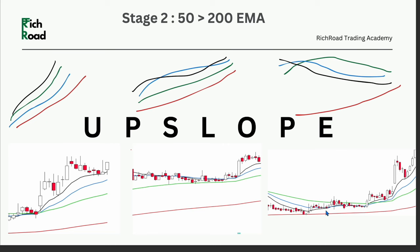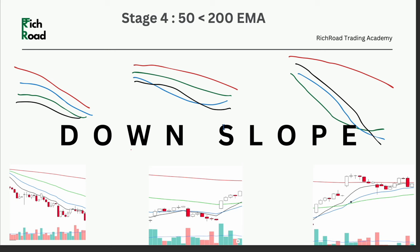The inverse of stage two is stage four. In a perfect stage four, 10 is below 20, below 50, below 200, and all are downsloping. Then you may have a stage four where the 10 goes above 20, even 20 above 50, and those three are upsloping — but they are all below a downsloping 200 moving average. That is still a stage four. These basics should be very clear because we'll be using the interplay of stages a lot.